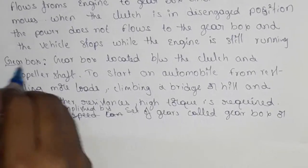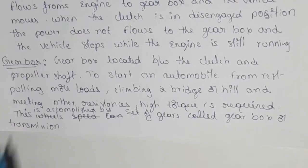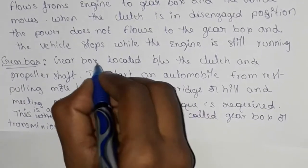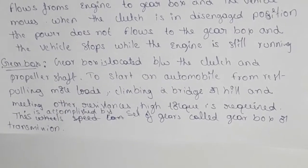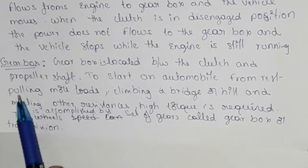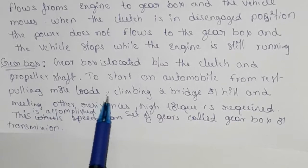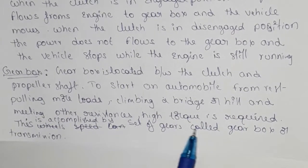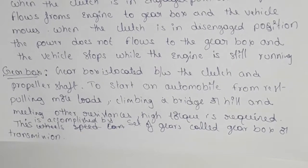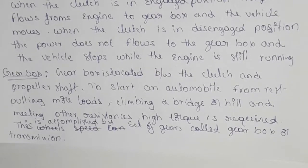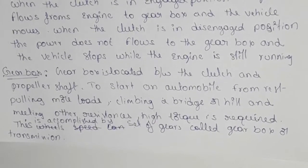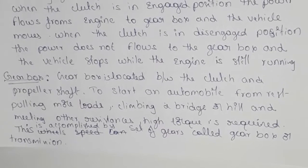The gearbox is located between the clutch and the propeller shaft. To start an automobile from rest, pull more loads, and climb hills, and to meet other resistance, high torque is required. This is accomplished by a set of gears, which is called the gearbox or transmission.